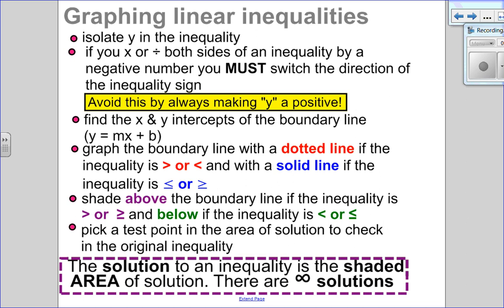Let's look at how we find these solutions. These are the steps for graphing linear inequalities. The very first thing you need to do is isolate y in the inequality. Remember back in junior high, when you multiply or divide both sides of an inequality by a negative, you have to switch the sign. I like to avoid that just by always making my leading coefficient positive.